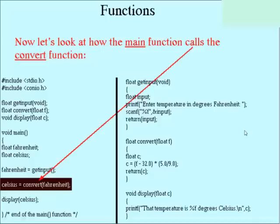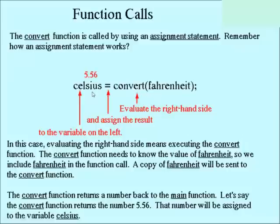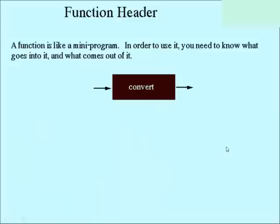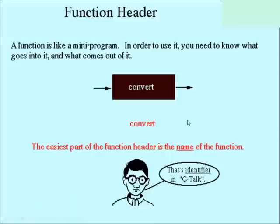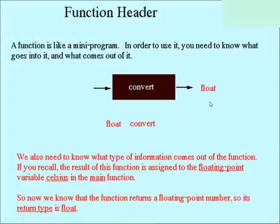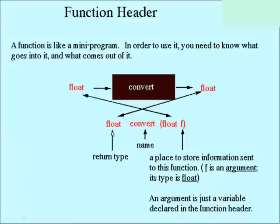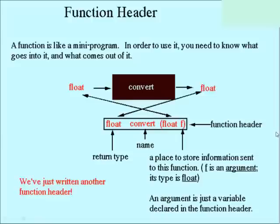Now let's take a look at the convert function. It's another assignment statement — evaluates the right-hand side and assigns the result to the variable on the left. Here's our function header again. Why do we have float here and float here? The convert function is our black box — it returns a floating point number, so the return type is float. It also takes a floating point number as input, because the function needs us to send it something to convert. So it takes a float as input, returns a float, and the name is convert. There's another function header.